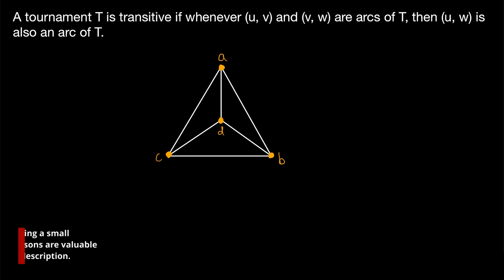In a previous lesson, we introduced tournament graphs, and I'll leave a link in the description if you need a refresher. A tournament graph is just an orientation of a complete graph, or in other words, it's a directed graph with exactly one arc between each pair of vertices.